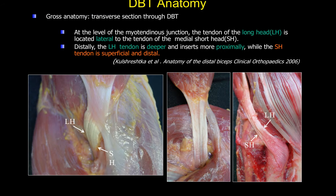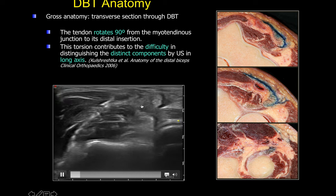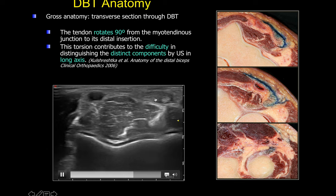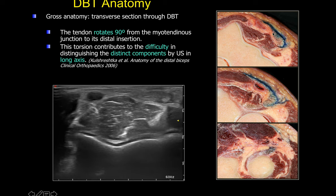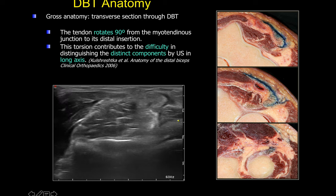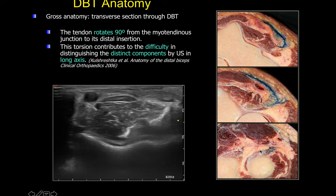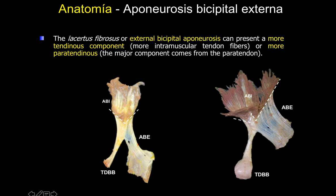At the level of the myotendinous junction, the tendon corresponding to the long head is located lateral to the tendon of the short head. Distally, the long head attaches deeper and more proximal while the short head is superficial and more distal. The tendon also rotates 90 degrees from the myotendinous junction to its distal attachment, with the tendon of the right arm rotating clockwise. This torsion explains the difficulty in distinguishing both components in the long axis. The lacertus fibrosus is also very variable, with some cases showing more tendinous components and others more paratendinous component.